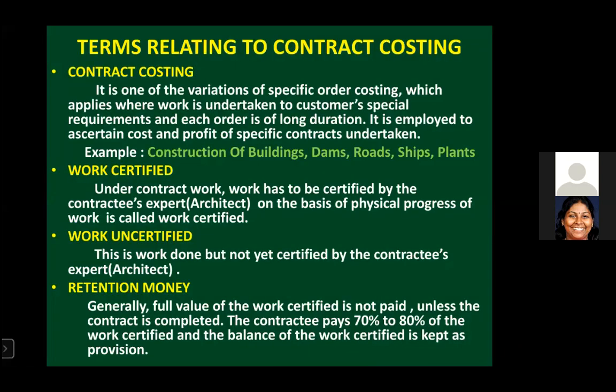What is contract costing? It is one of the variations of specific order costing, which applies where work is undertaken to a customer's special requirements and each order is of long duration. It is employed to ascertain the cost and profit of specific contracts — for example, construction of buildings, dams, roads, ships, and plants.